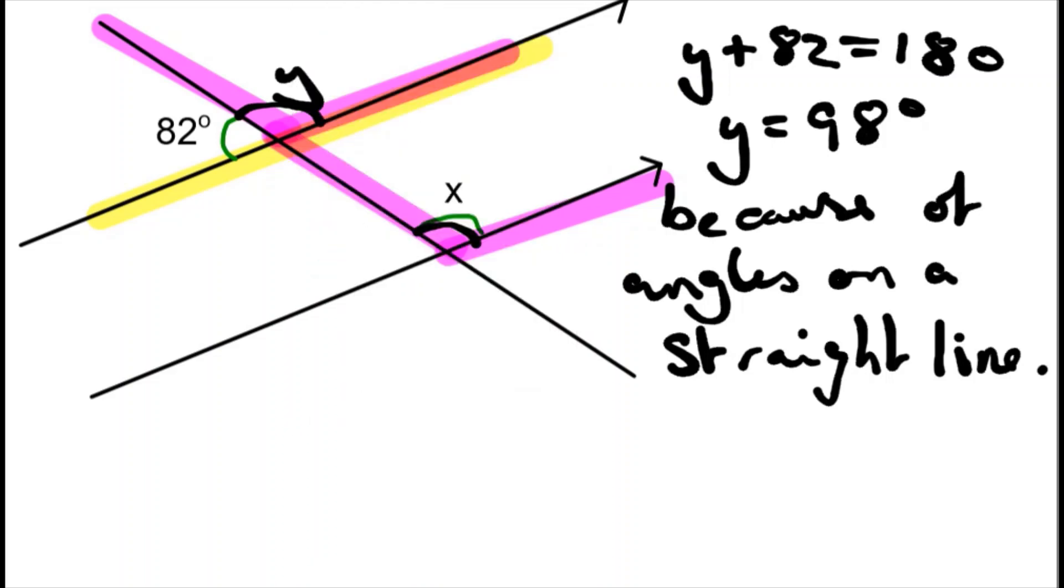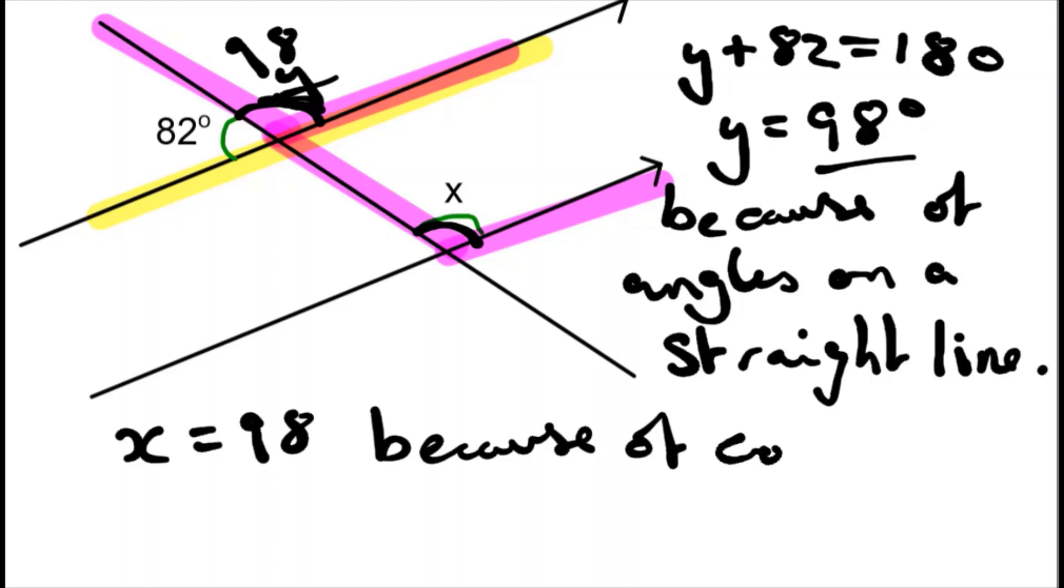Hopefully we know that this Y and X are corresponding angles, so they are equal. We know what Y is. It's 98. So we know X also equals 98 because of corresponding angles. We must state the reason to get full marks.